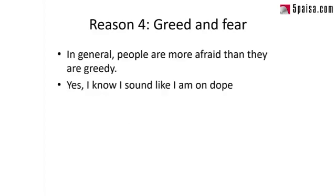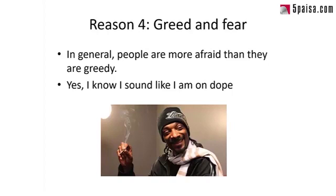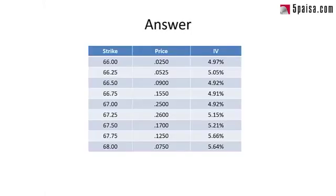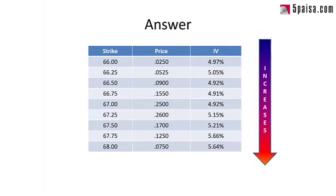Here's a fun bonus question: what do you think the skew looks like in USD-INR? Pause and think about it. The answer is that vol is higher for higher calls in USD-INR and lower for lower puts — so the direction of fear is actually reversed. Puts are actually cheaper in IV terms than calls in USD-INR.